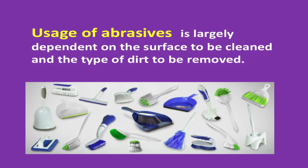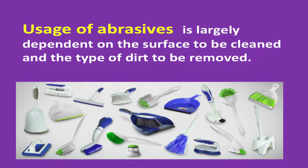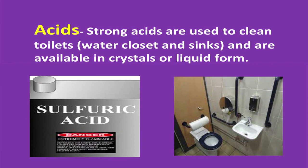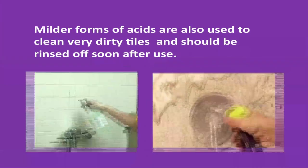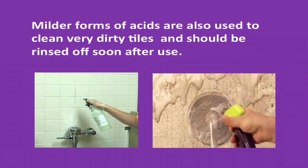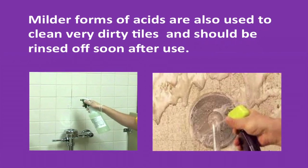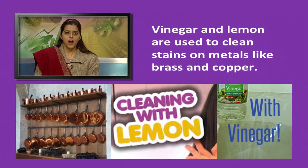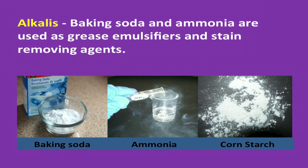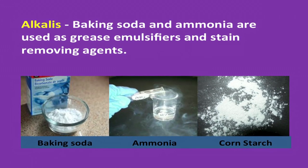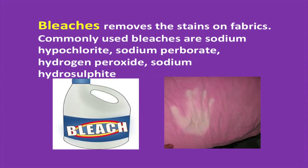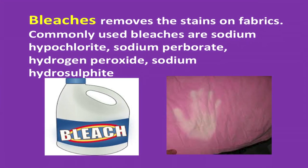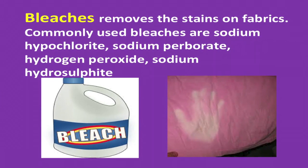Strong acids are used to clean toilets, water closets, and sinks and are available in crystals or liquid form. Milder forms of acids are also used to clean very dirty tiles and should be rinsed off as soon as possible after use. Vinegar and lemon are used to clean stains on metals like brass and copper. Alkalis such as baking soda and ammonia are used as grease emulsifiers and stain removing agents. Bleaches such as sodium hypochlorite, sodium perborate, hydrogen peroxide, sodium hydrosulphite, etc., are used to remove stains on fabrics.